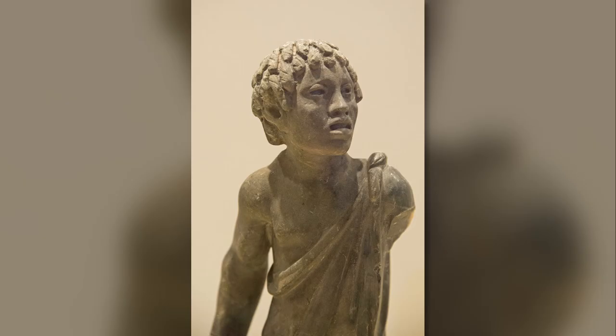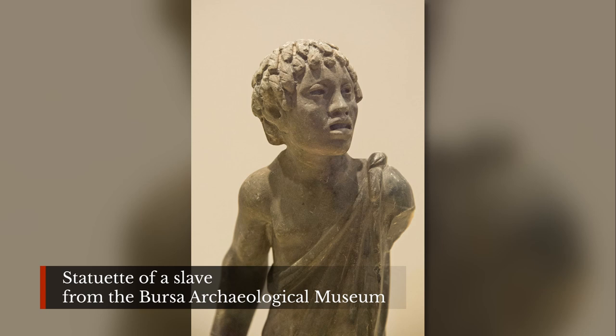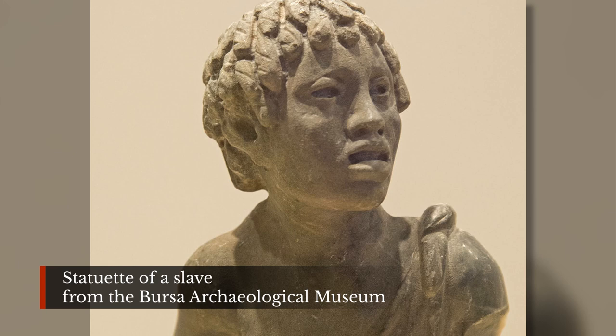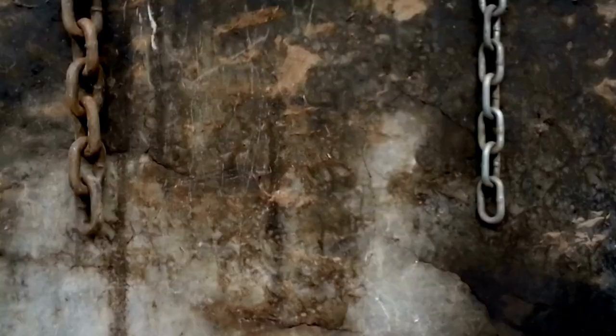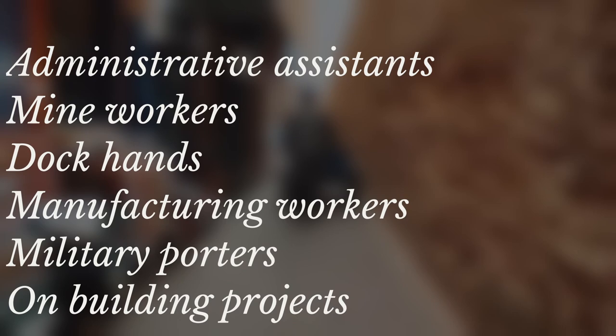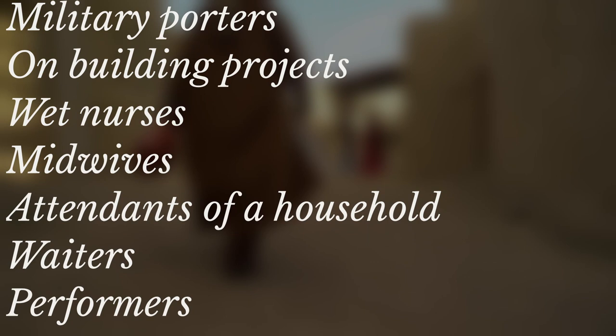Highly skilled slaves usually cost more than unskilled workers, though cost still varied by supply and demand. Agricultural unskilled slaves might be sold cheaply at one time but for a much higher price at another. Agricultural slaves were treated worse than house slaves, usually chained together and kept in barracks or sheds like animals, often working from dawn until dusk. Slaves could serve as administrative assistants, mine workers, dock hands, manufacturing workers, military porters on building projects, wet nurses and midwives, household attendants, waiters, and performers in certain religious rites.